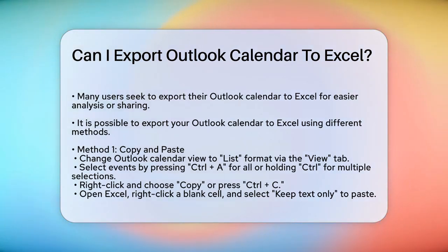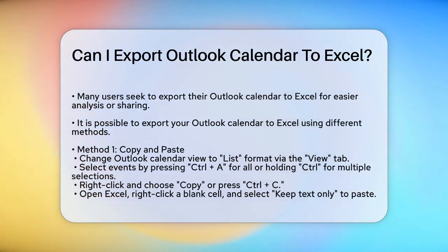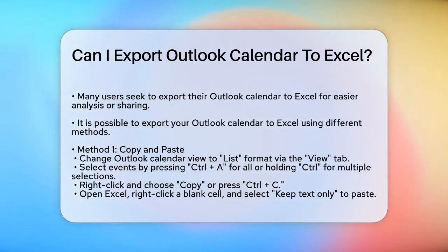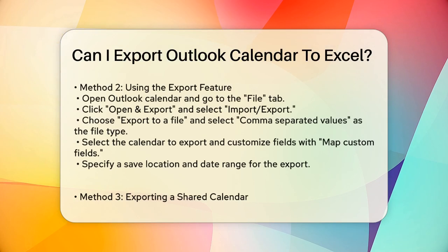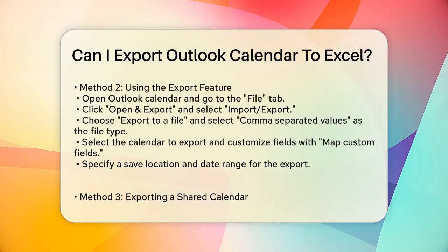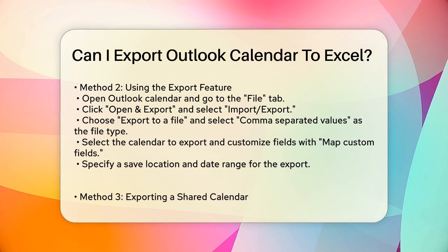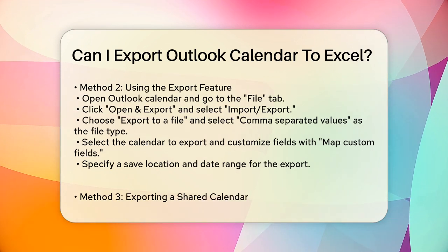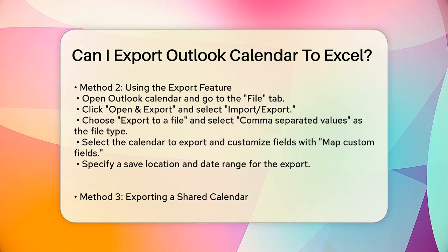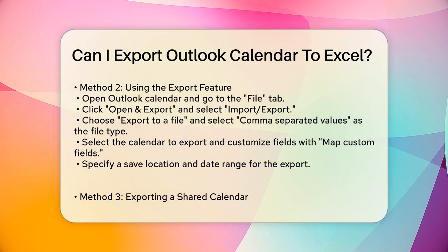Next, select the events you want to export. You can select all events by pressing Ctrl+A, or select multiple events by holding the Ctrl key and clicking on each one. Right-click on the selected events and choose Copy, or press Ctrl+C. Open a new Excel workbook, right-click on a blank cell, and select Keep Text Only under the Paste options. This will paste your calendar events into the Excel sheet, complete with details like subject, location, and time.